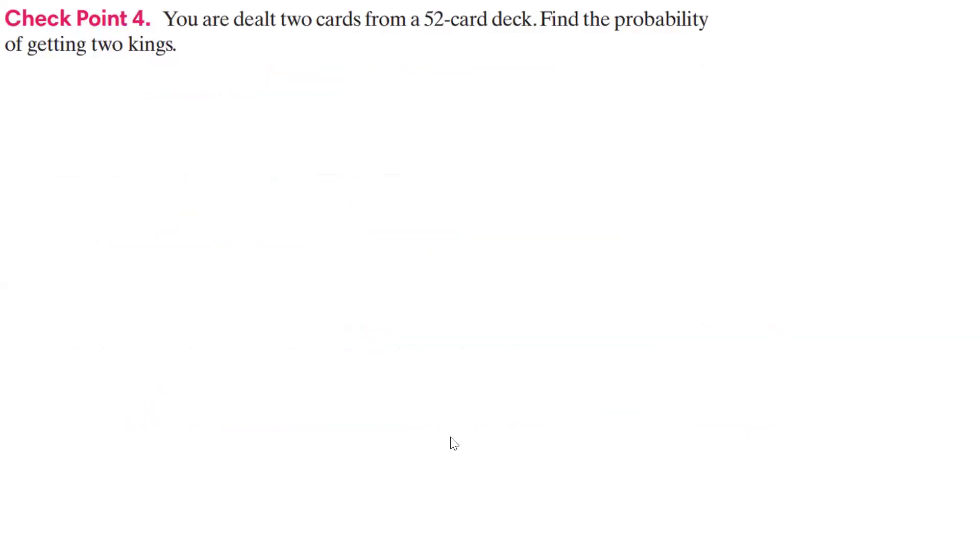So let's start with this one. You're dealt two cards from a 52-card deck. Find the probability of getting two kings. So we want the probability of a king and a king.